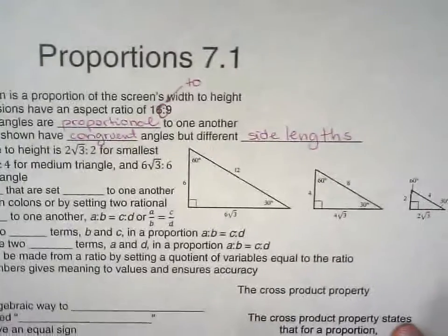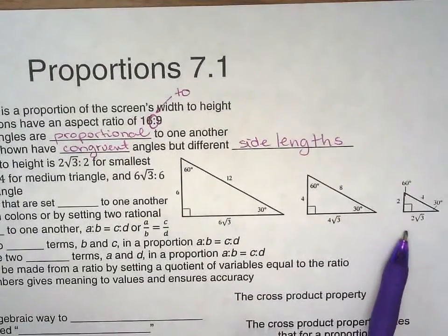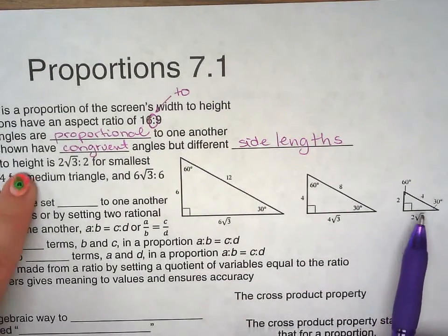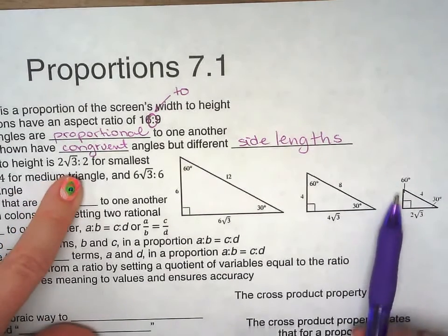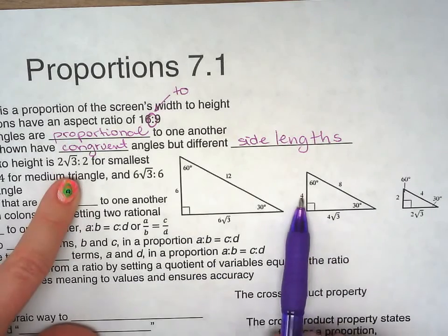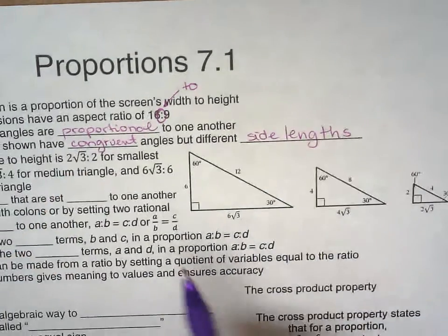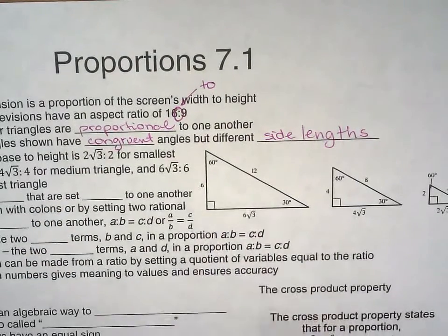If you look at the little baby triangle right here, you have the base is 2√3 to 2 for the height, 4√3, 4 for the height. So they are proportional.